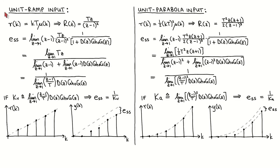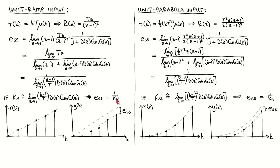The second reference input we look at is the unit ramp or constant velocity input. The unit ramp is defined as K times T times Mu of K, and we can read its Z transform off from the Z transform tables. Using the result derived earlier, we write the steady-state error, apply the limit to the numerator and denominator, and after dividing numerator and denominator by T, we get a simplified expression. We define the velocity error constant Kv as the limit as Z tends to 1 of (Z minus 1) over T times the loop transfer function, and we can write the steady-state error as 1 over Kv.